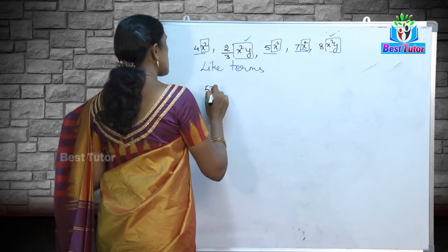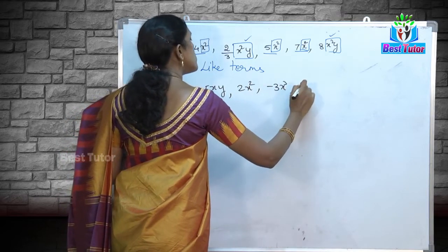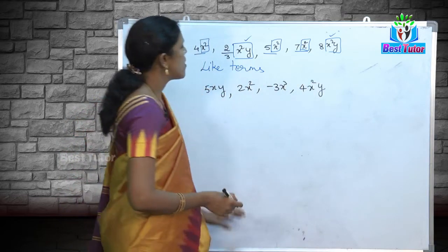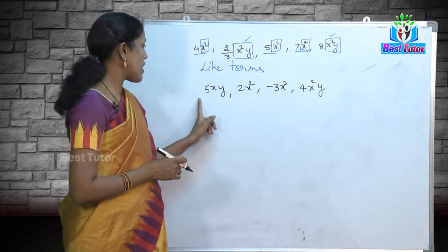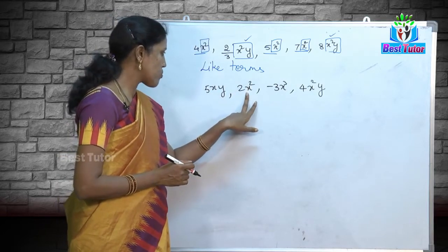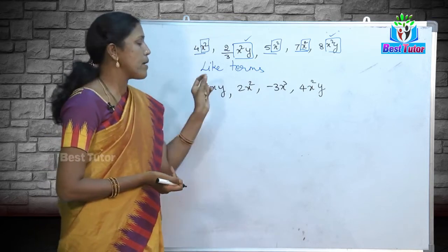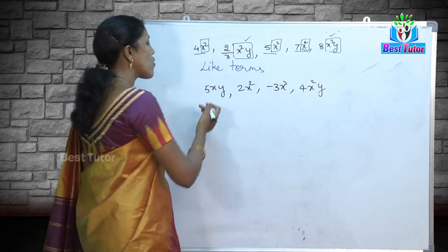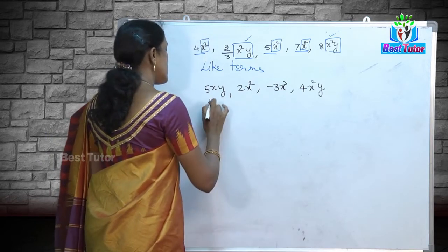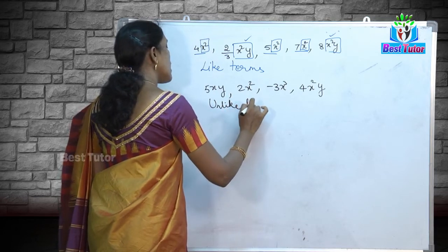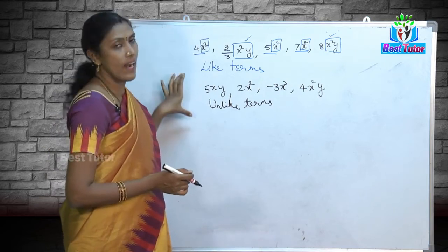Now consider: 5xy, 2x², −3x³, and 4x²y. Are there any like terms here? The literal coefficients are xy, x², x³, and x²y — none of the terms share the same literal coefficient. So all these are called unlike terms.